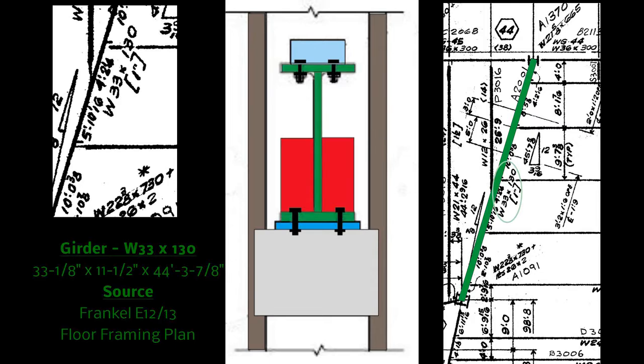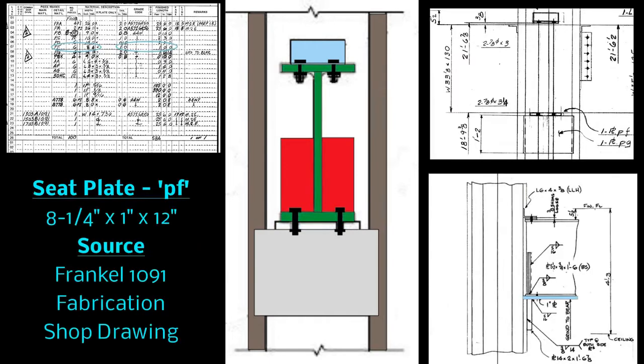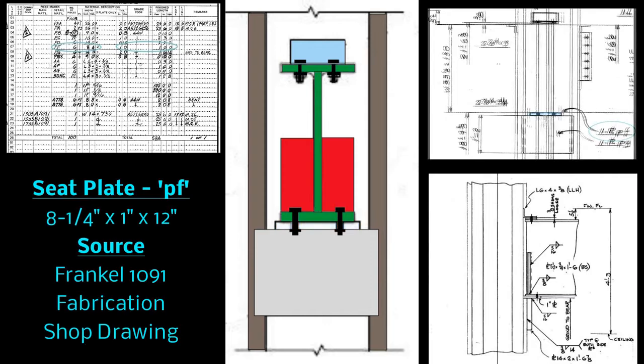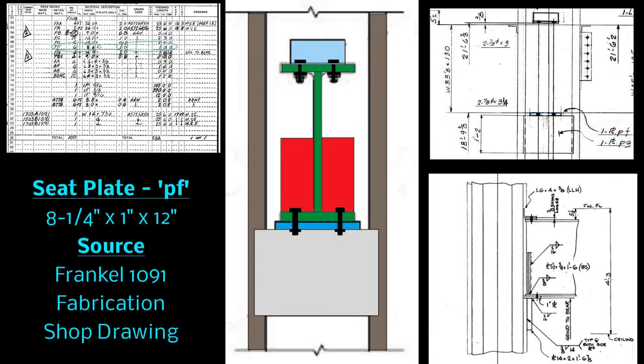The girder sits on a seat plate which is called plate PF. Plate PF is 8 1/4 inches by 1 inch by 12 inches. It can be seen in Frankel 1091 fabrication shop drawing. NIST strongly asserted that this plate was only 11 inches wide but it is in fact 12 and they have admitted this error now.